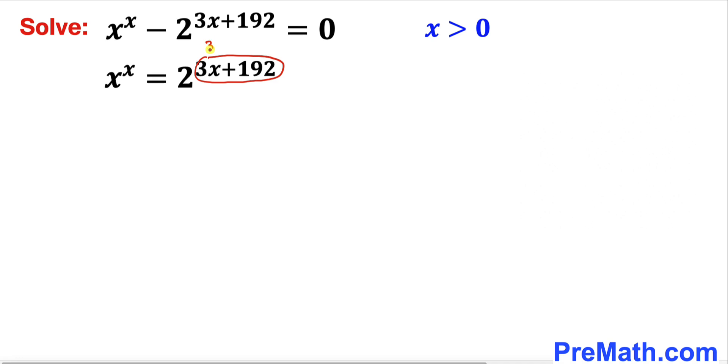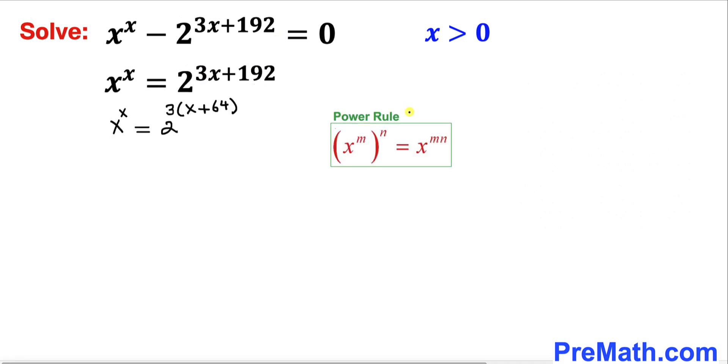We can see that 3 is a common factor, so this can be written as 3(x + 64). Now let's recall the power rule of exponents. The right hand side can be written as (2^3)^(x+64).